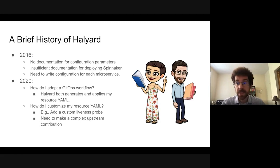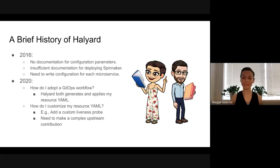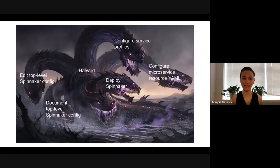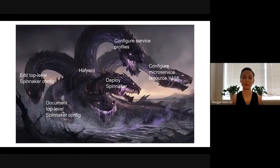Some people want different liveness probes for their Spinnaker microservices, or certain microservices to have certain affinities and tolerations attached to them so they can deploy on certain nodes. All of these customizations need to be done via upstream contributions. So with that, I'll pass it over to Maggie to start talking about Klee. Halyard is doing many things at once: documenting what's available via its CLI, exposing a CLI to edit config, translating those into individual service profiles, configuring the microservice resource YAML, and then applying those — all in one.